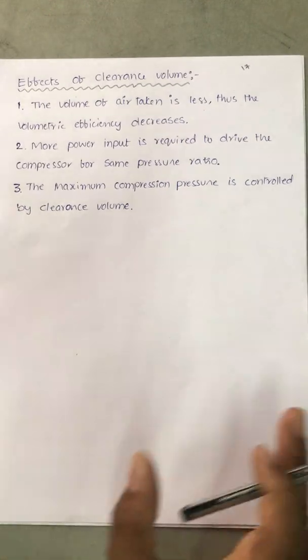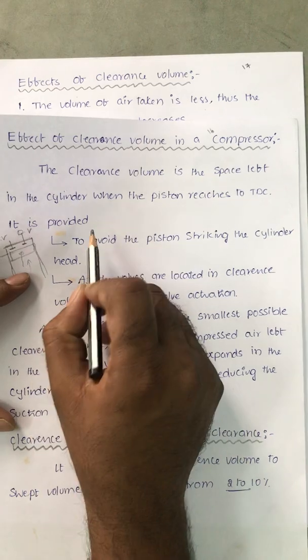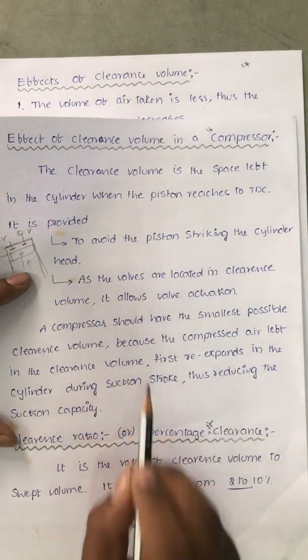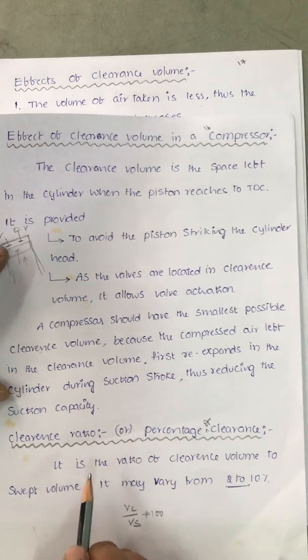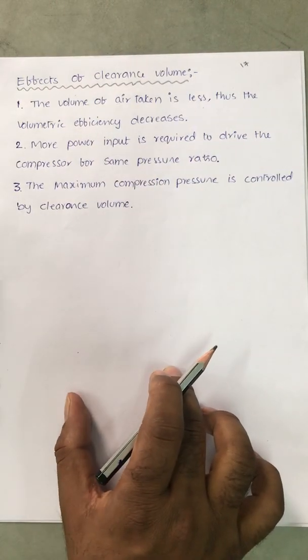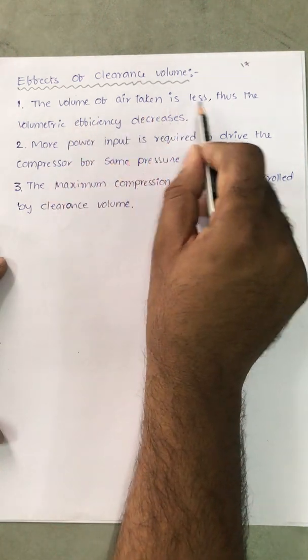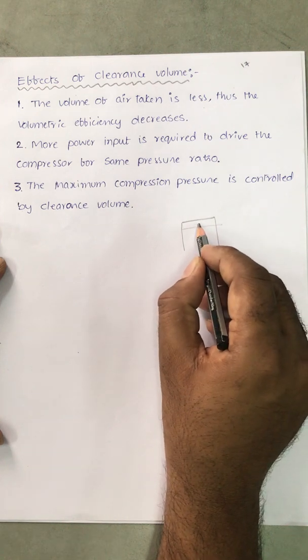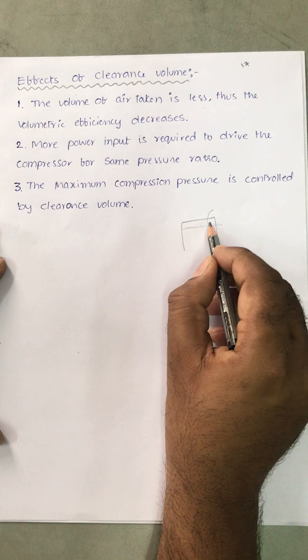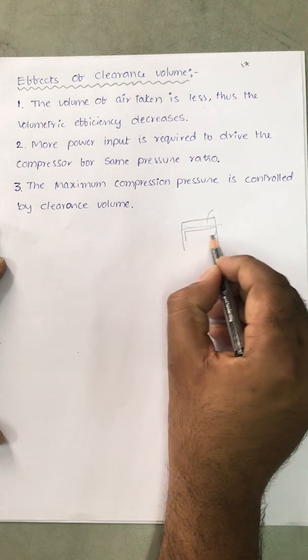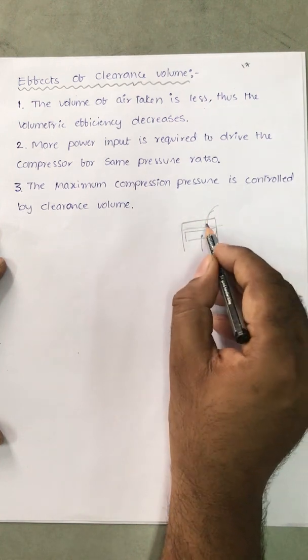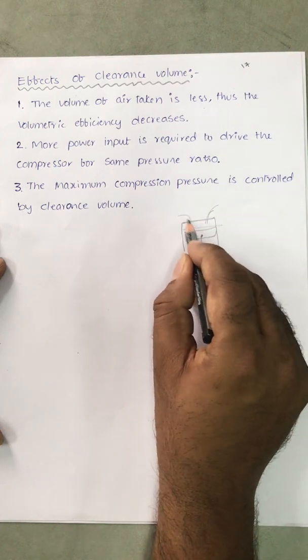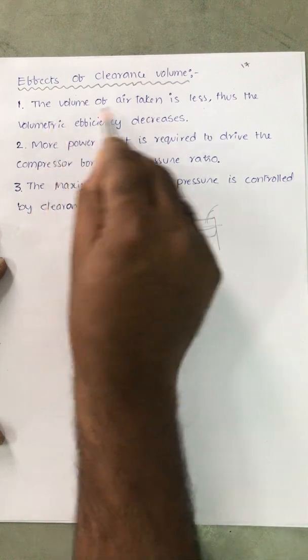Now we need to discuss the effects of clearance volume. The first effect is that the volume of air taken in is less. Because clearance volume is provided, in the compression stroke the air inside the clearance volume remains inside and does not exit. So in the suction stroke, the amount of air taken in is reduced.